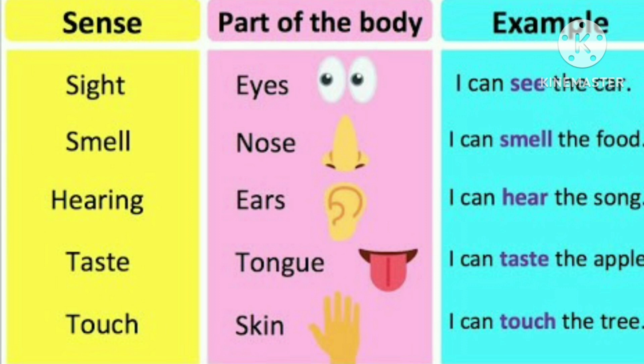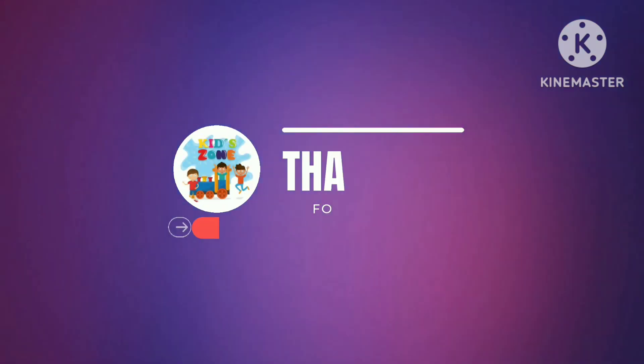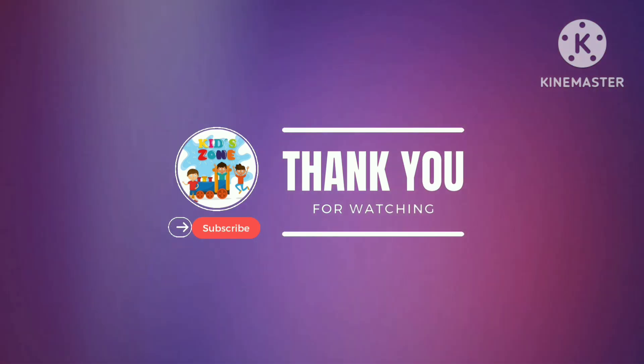Let's see the examples of each sense. Sight — part of the body: eyes. Example: I can see the color. Smell — smell with nose: I can smell the food. Hearing — hearing with ears: I can hear the song. Taste — taste with tongue: I can taste the apple. Thanks for watching, see you tomorrow guys!